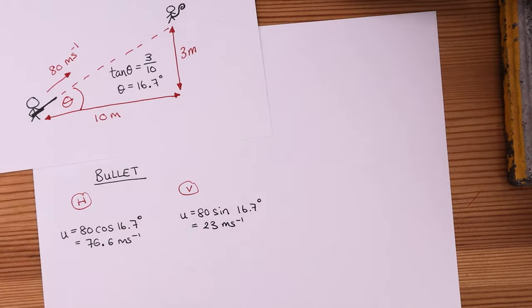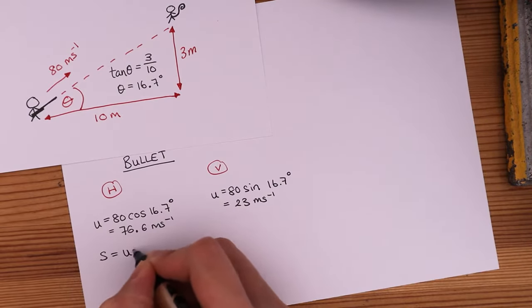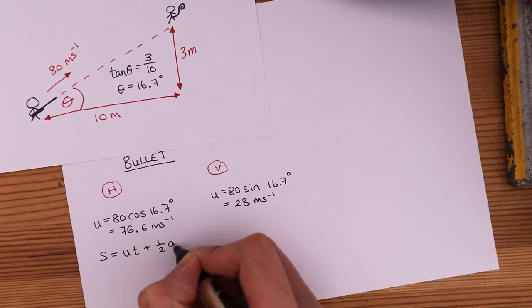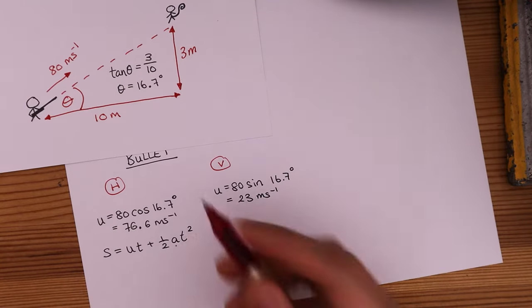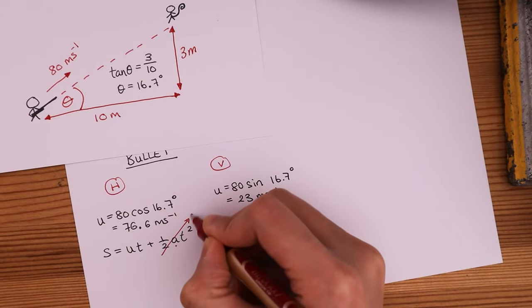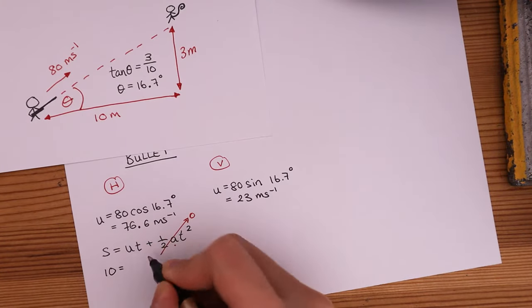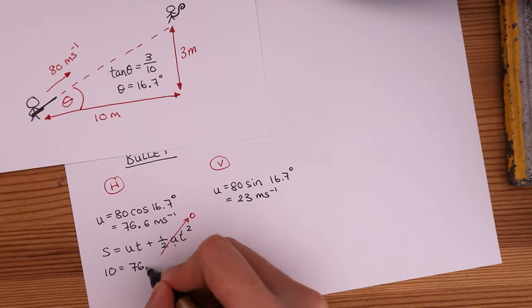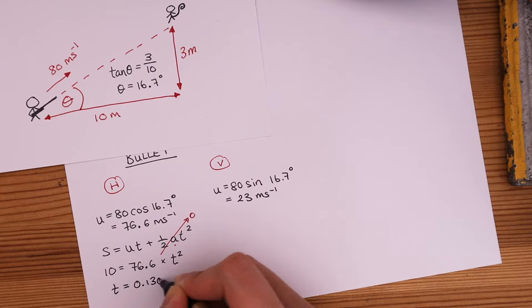We now have everything that we need to let us use one of the equations of motion for the horizontal components. One of the equations of motion is s equals u t plus half a t squared. s is the displacement, u is the initial velocity, t is the time taken. There is no horizontal acceleration, so this part of the equation becomes zero. Substitute 10 meters for displacement, u is 76.6 meters per second. Rearranging this, we get time is 0.1305 seconds.